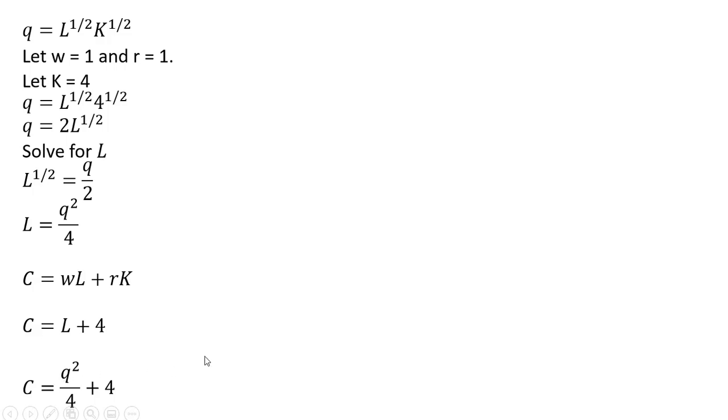To get average cost, we're going to divide the cost function through by Q. So average cost is total cost divided by the quantity of output. And doing that, we get this final average cost equation, short-run average cost equation.